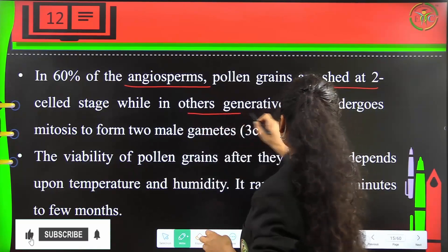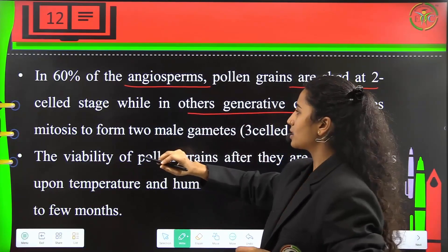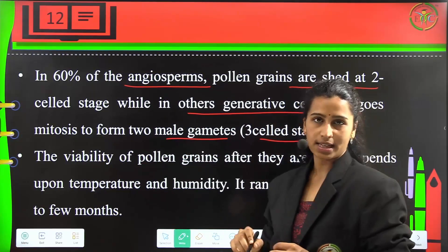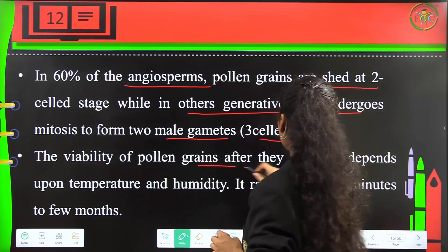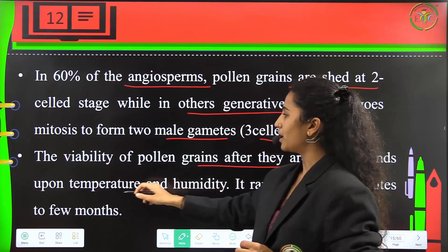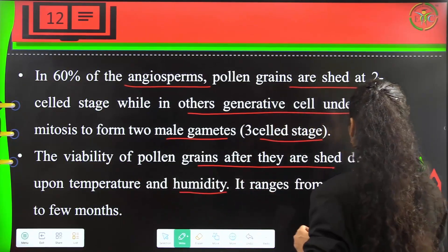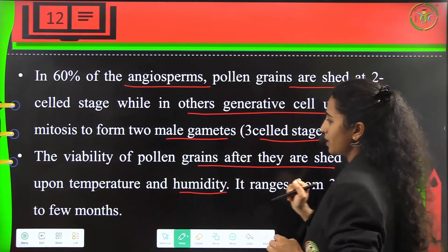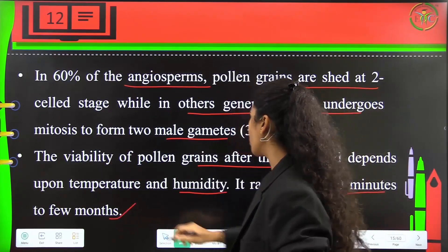In other angiosperms, the generative cell undergoes mitosis to form two male gametes, which is the three-cell stage. The viability of pollen grains after they are shed will depend upon the temperature and the humidity, ranging from 30 minutes to a few months.